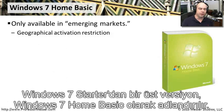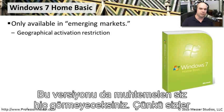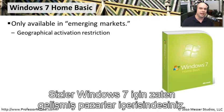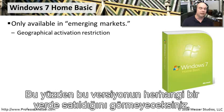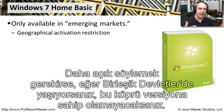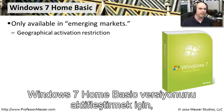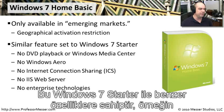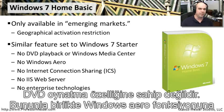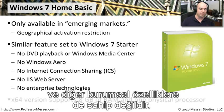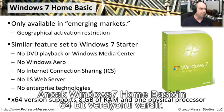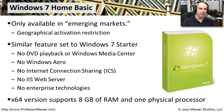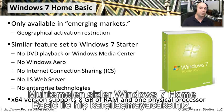One step up from Starter is Windows 7 Home Basic. If you've never seen this version, that's probably because you don't live in an emerging market for Windows 7. In established markets like the United States you can't even activate it. This version has a very similar feature set to Starter — no DVD playback, no Windows Aero, no enterprise functions. However, it does have a 64-bit version, supports up to 8 GB of RAM, and supports one physical CPU.